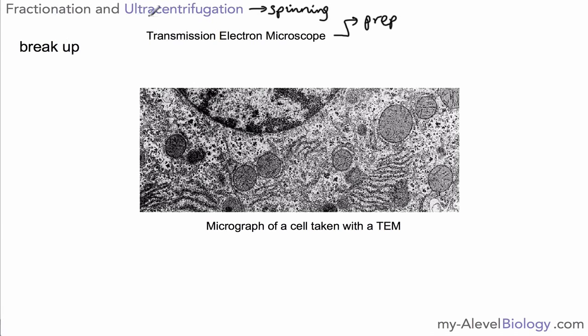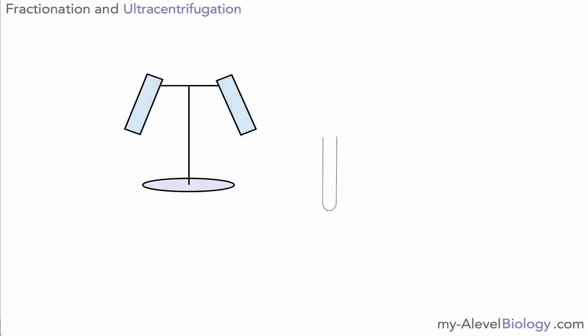So we've got breaking up and spinning in order to separate out these organelles and how is it done? Well we have an instrument called a centrifuge or an ultracentrifuge. It actually looks a bit like this, this is a desktop one that you could just find in a lab, fits on top of a desk and we would use it to spin our samples.